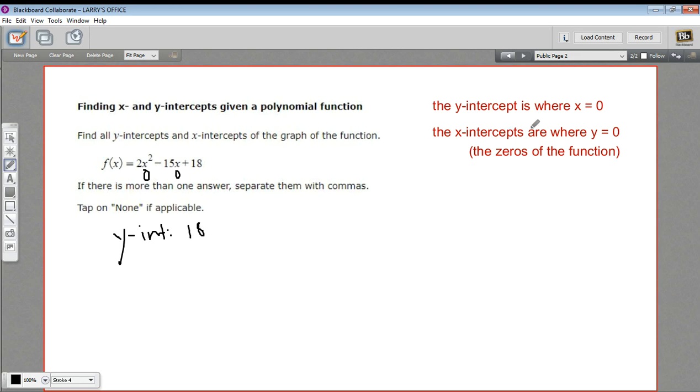All right. So let's talk about the x-intercepts. These are the places where the function itself is 0, where y equals 0. This is also known as the zeros of the function. So you've probably had some experience finding these already.